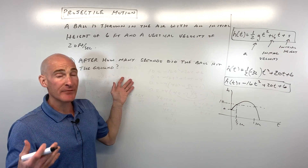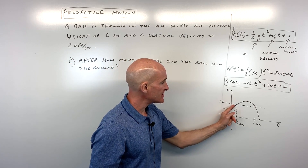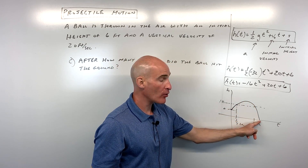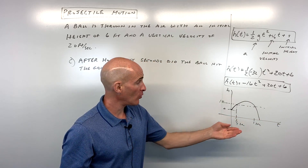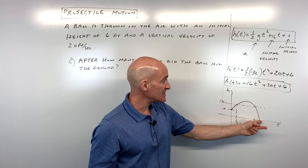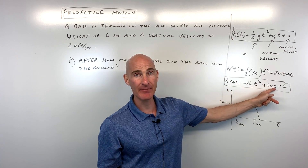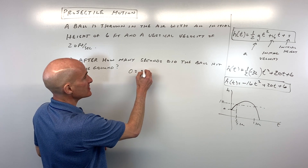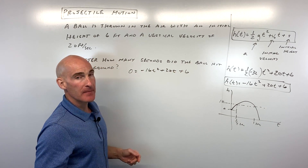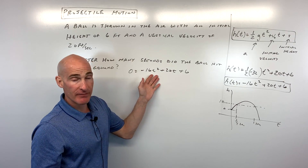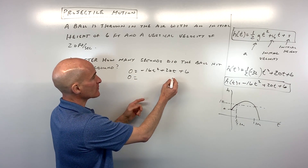Let's go to part C: after how many seconds did the ball hit the ground? Going back to our diagram, the ball goes up and comes back down. We want to know when it hits the ground. The height of the ball when it hits the ground is zero. So we set zero equal to -16t² + 20t + 6 and solve for time. We can factor or use the quadratic formula — let's do both for variety.